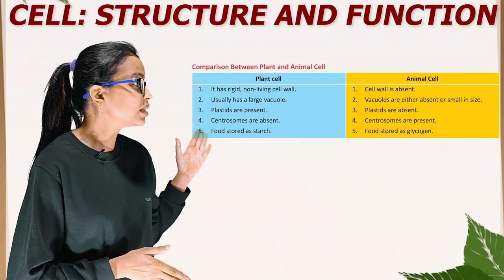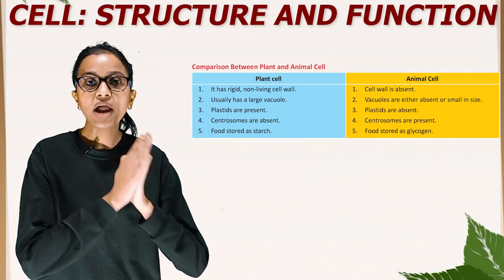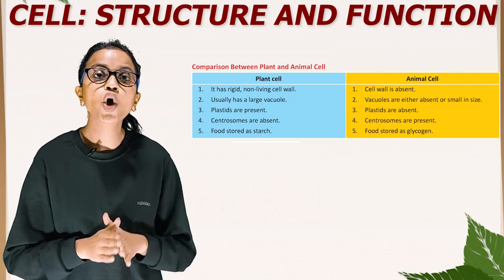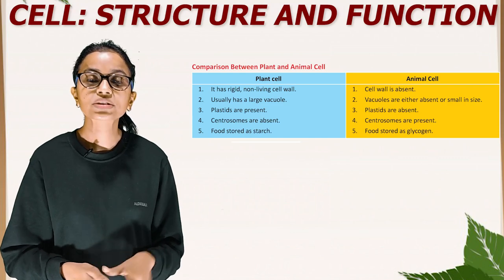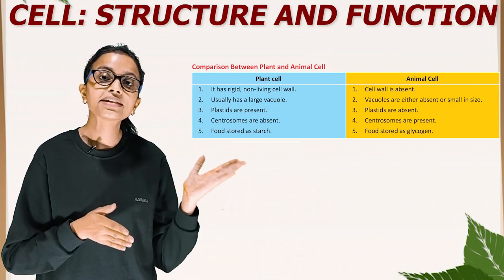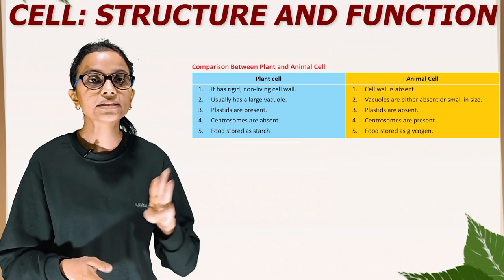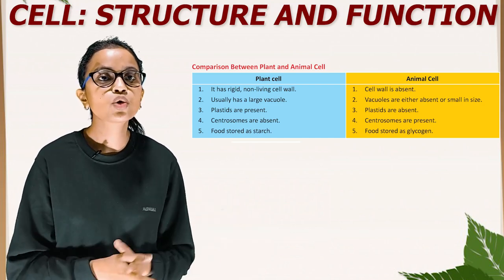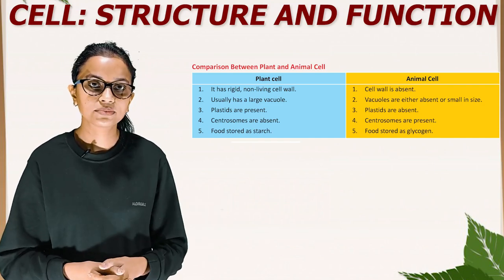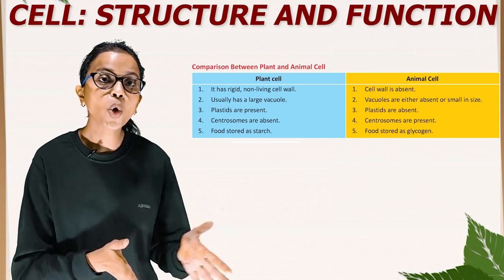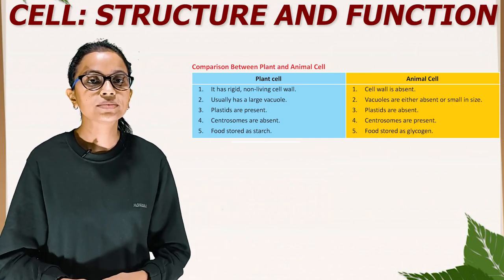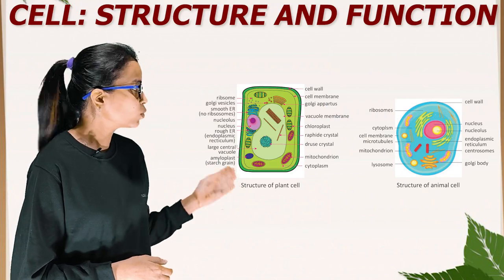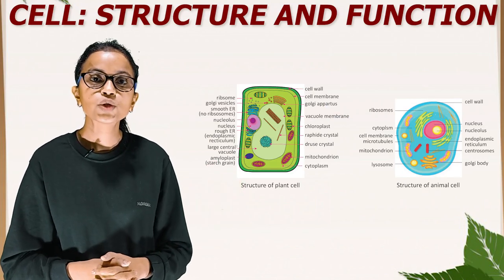This table depicts the comparison between plant and animal cells. Plant cell vs. animal cell: First, plant cells have a rigid non-living cell wall; cell wall is absent in animal cells. Second, plant cells usually have a large vacuole; vacuoles are either absent or small in animal cells. Third, plastids are present in plant cells; plastids are absent in animal cells. Fourth, centrosomes are absent in plant cells; centrosomes are present in animal cells. Fifth, food is stored as starch in plant cells; food is stored as glycogen in animal cells. Students, these two diagrams show the structure of a plant cell and the structure of an animal cell — please go through them.